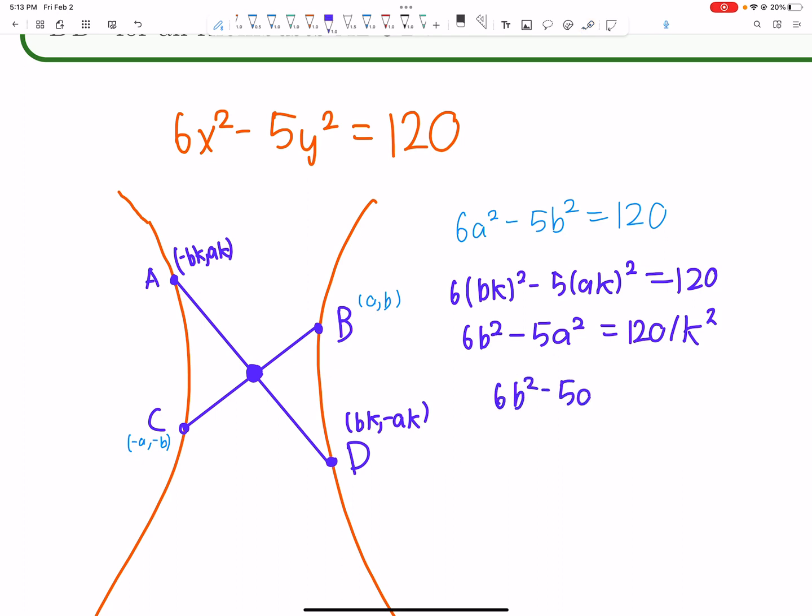When will this not have a solution? If 6b² - 5a² = 1, we can set k² ≈ 120 and get a valid rhombus. But if 6b² - 5a² = 0, then 120/k² = 0, which only works if k is infinity - not possible.